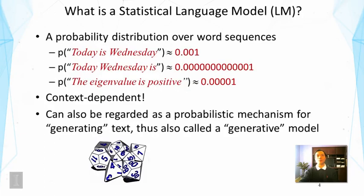What is a language model? It's just a probability distribution over word sequences. This model gives the sequence 'Today is Wednesday' a probability of 0.001, while 'Today Wednesday is' gets a very, very small probability because it's non-grammatical. The probabilities given to these sequences can vary a lot depending on the model, and it's clearly context dependent.